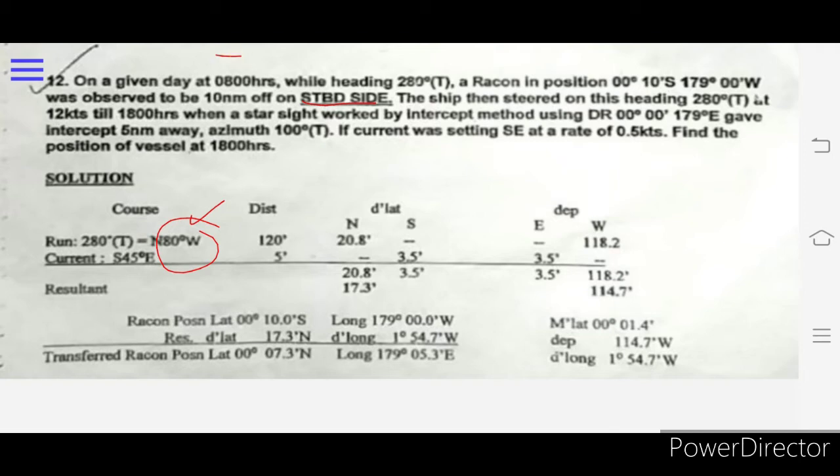From 0800 to 1800 the vessel has covered 10 hours at a speed of 12 knots, so we get our distance of 120 nautical miles.